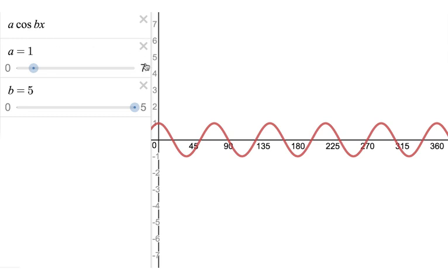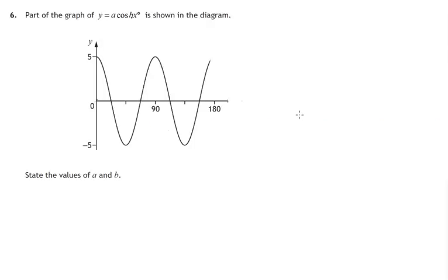So let's go back to the question. So we can now make sense of this question. We discovered that a was the amplitude. So in this case, the graph goes from 5 down to negative 5. So the amplitude is 5. The value of a is 5.